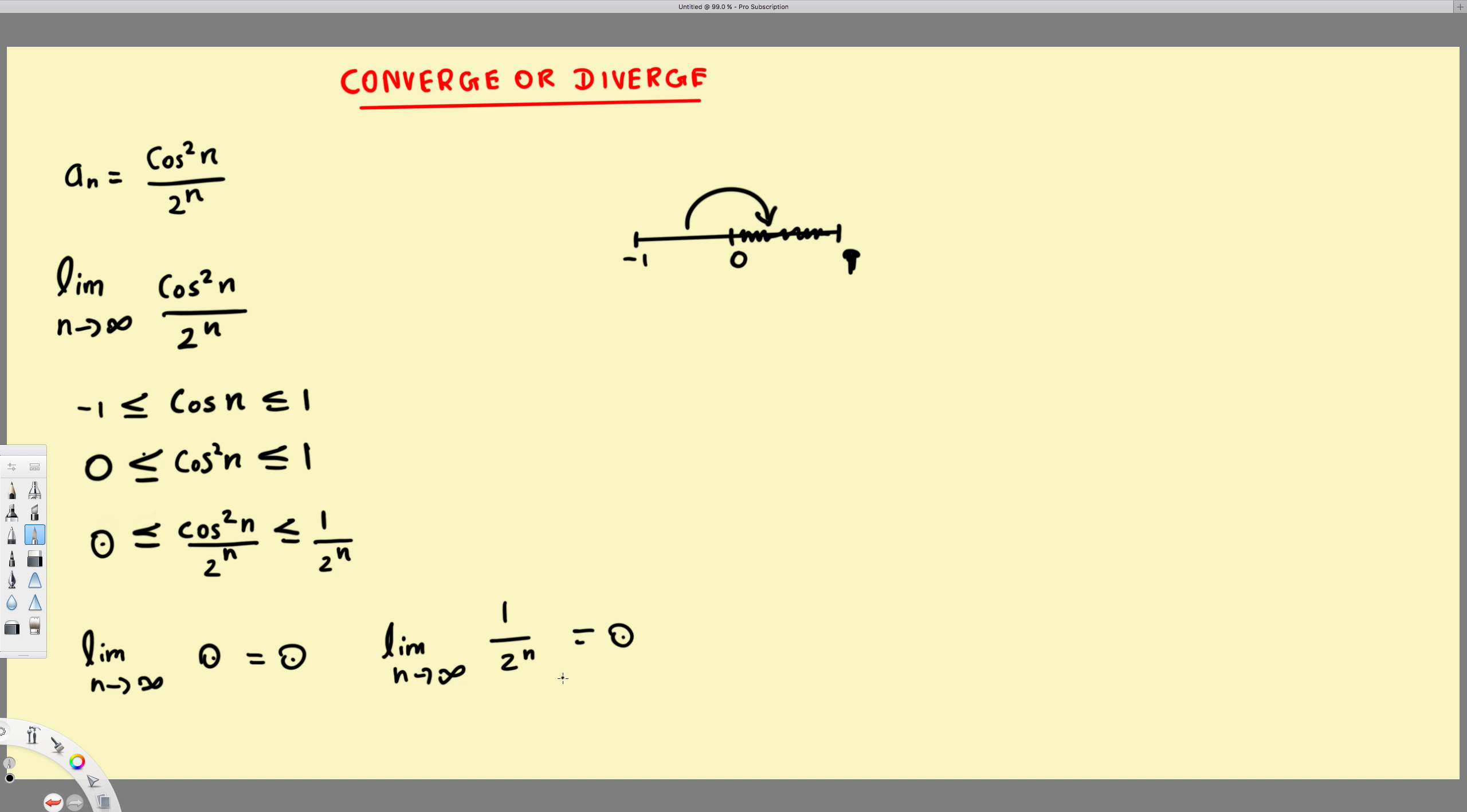So according to squeeze theorem, if this one is 0, if this one is also 0, therefore we can say that this one also 0. So limit cos²n over 2^n is also going to be 0. Since we have a finite number as our answer, this converges.